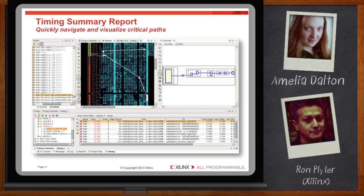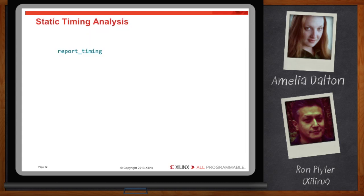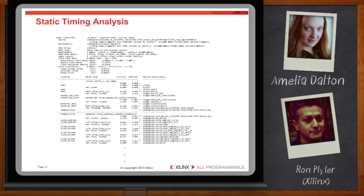For deep dive analysis into problem areas, there is the report timing command. Similar to report timing summary, report timing analyzes the design against constraints and reports critical paths. The difference is that report timing has many more options for detailed analysis — like specific start points and end points and number of paths — resulting in a nice detailed description of the timing paths, with cell and net delay accumulating for the clock paths and the data paths.